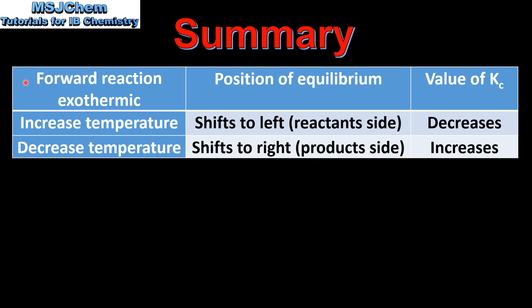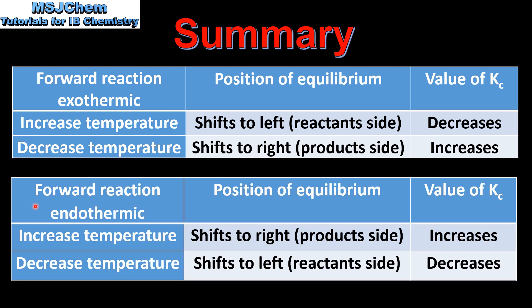Lastly, changes in temperature. If the forward reaction is exothermic: increasing the temperature shifts equilibrium to the left and Kc decreases; decreasing the temperature shifts equilibrium to the right and Kc increases. If the forward reaction is endothermic: increasing the temperature shifts equilibrium to the right and Kc increases; decreasing the temperature shifts equilibrium to the left and Kc decreases.